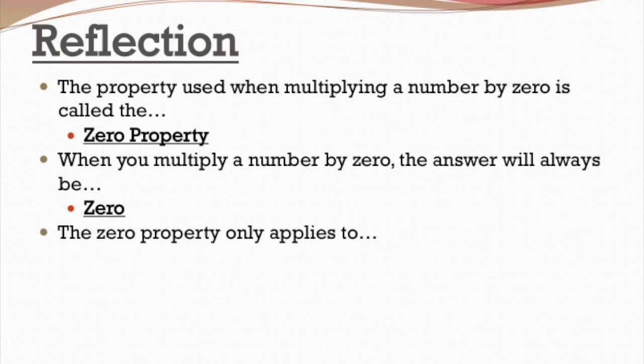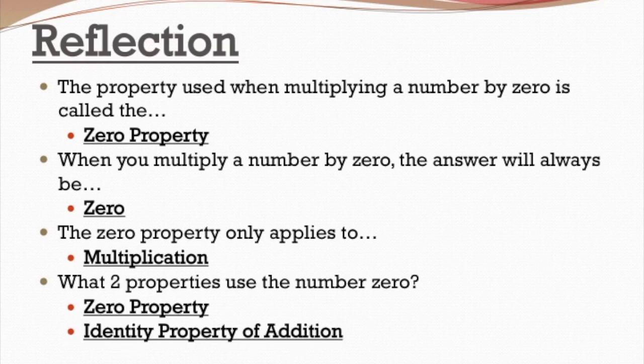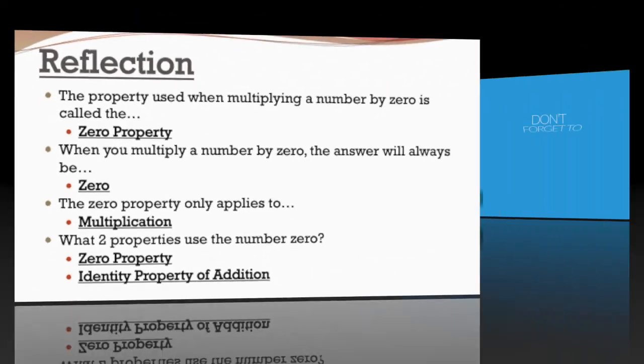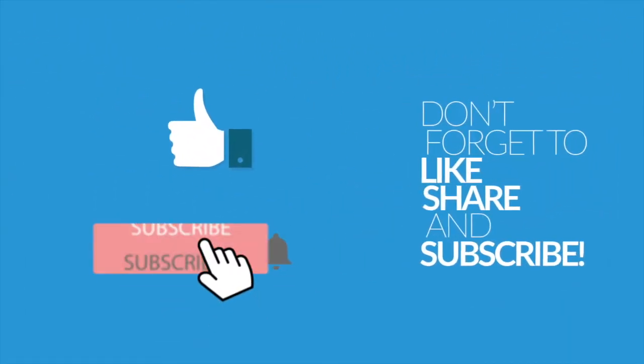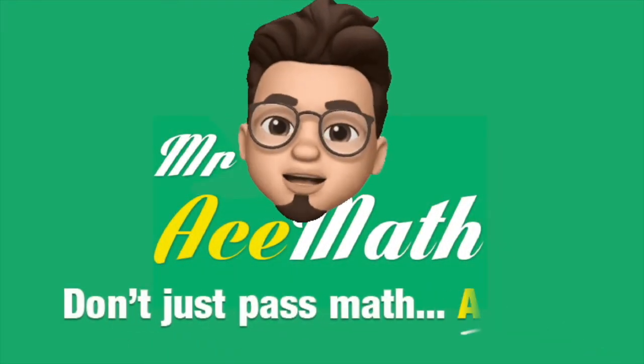The zero property only applies to multiplication. And what two properties use the number zero? One is the zero property, where we multiply by zero, and the other is the identity property of addition, where we add zero to a number. Don't forget to like, share, and subscribe. Thanks for using Mr. Ace Math — don't just pass math, ace it.